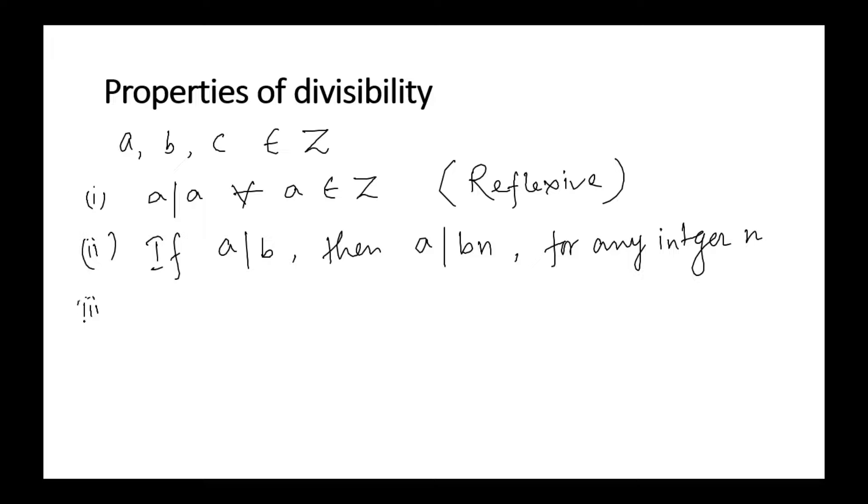Property 3: If a divides b and b divides c, then a divides c. This is called the transitivity property.